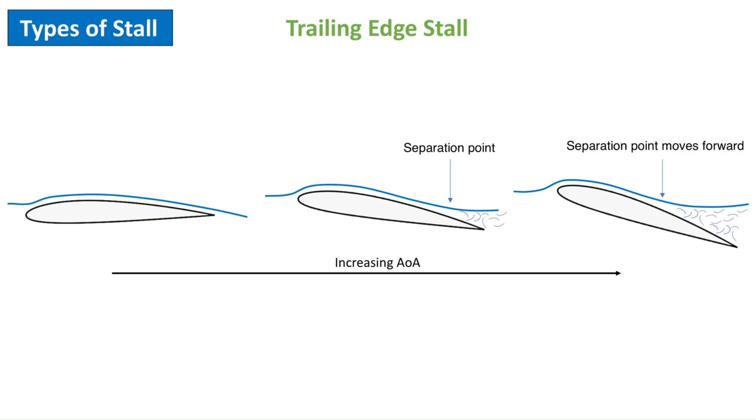Now let's look at the types of stall. Trailing edge stall: In this type, the flow starts to separate from the trailing edge and grows forward towards the leading edge as the angle of attack increases.